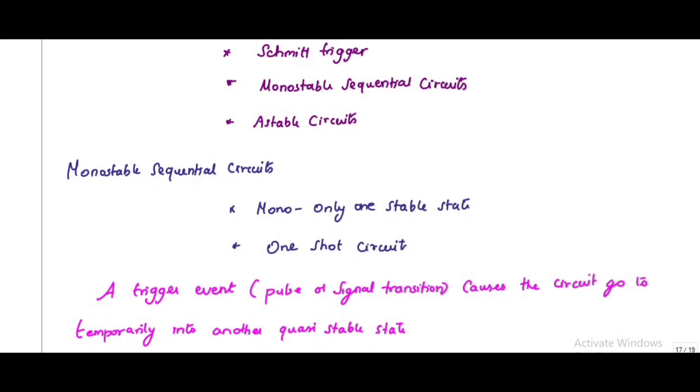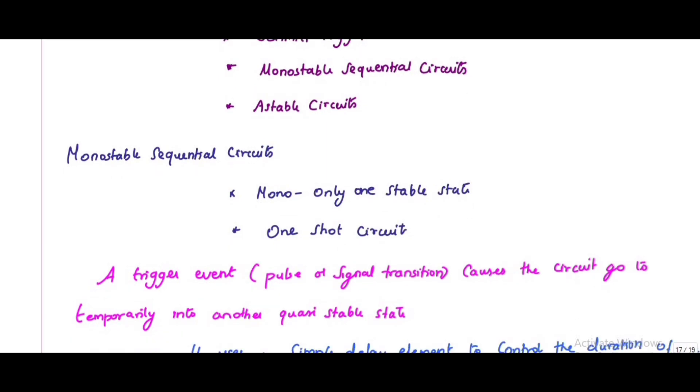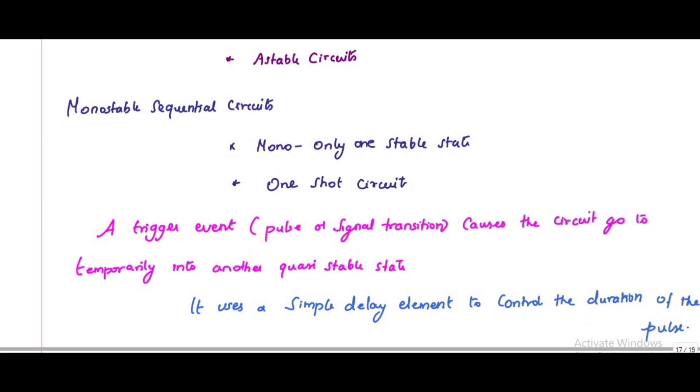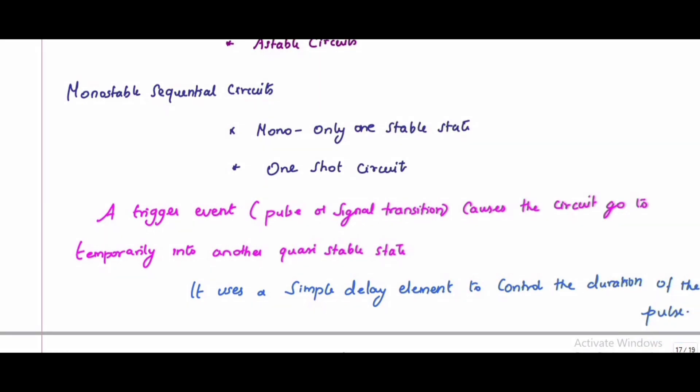Monostable sequential circuits: the mono represents only one stable state, and another one is quasi-stable state. This monostable circuit will generate a pulse of a predetermined width every time the circuit is triggered by a pulse or transition event. This circuit is called a one-shot circuit.